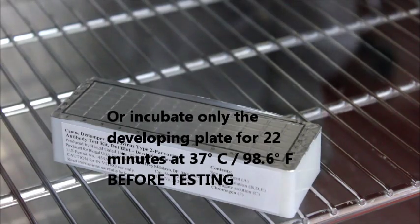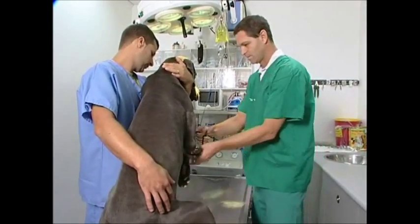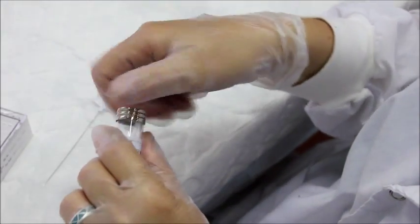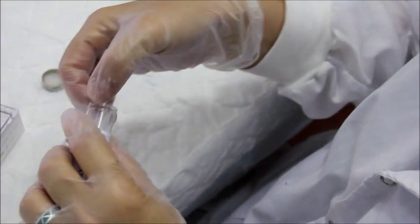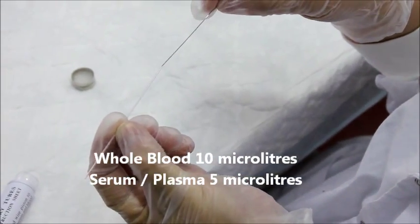Take a sample of blood from your pet being tested. Use a pipette or capillary tube to draw blood or serum from your test sample. For the testing of whole blood, use 10 microliters. For the testing of serum or plasma, use 5 microliters.